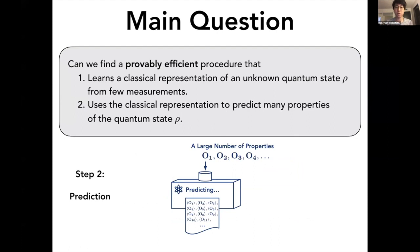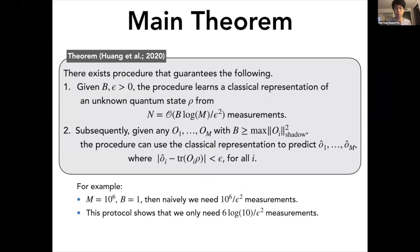So the short answer for this question is yes, and it's given in this theorem in our paper. We proved that there exists a procedure that guarantees the following: This procedure would learn a classical representation of an unknown quantum state from only B log M over epsilon squared measurements. Subsequently, after learning this classical representation, you could give the procedure M observables, any M observables O1 to OM with a norm bounded by B. Then this procedure could use this classical representation to predict the expectation values of all these observables up to error epsilon.